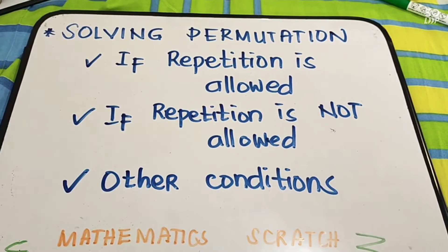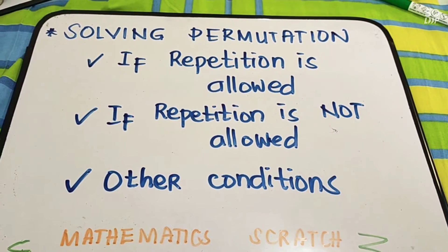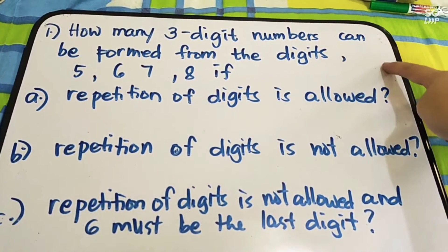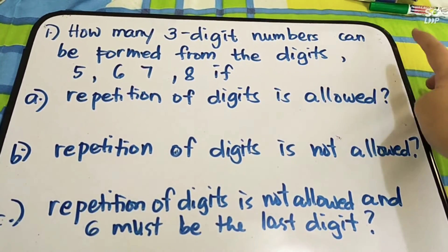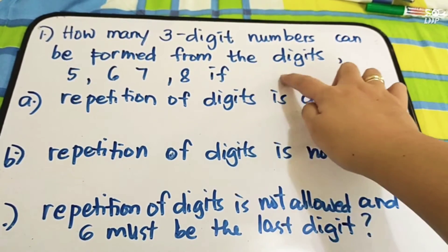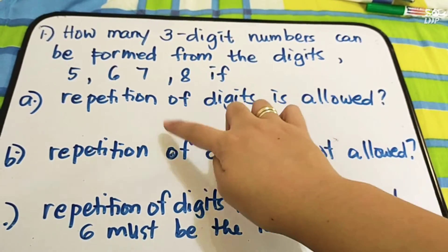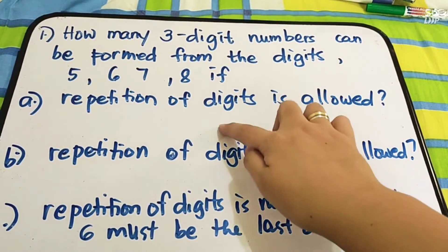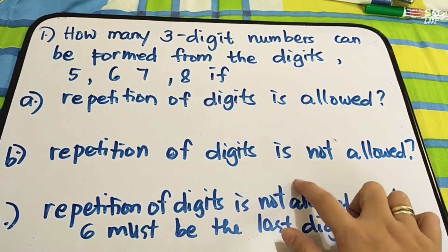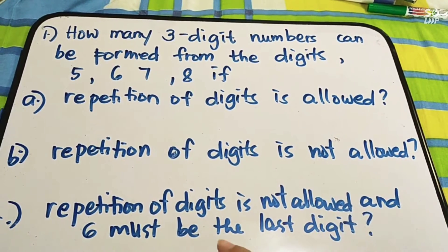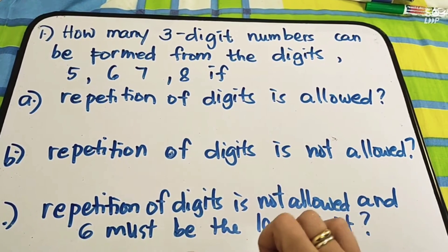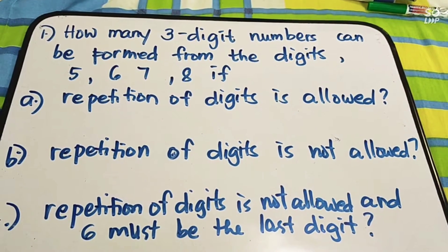Let's start with Example number one: how many three-digit numbers can be formed from the digits five, six, seven, eight? Letter A: repetition of digits is allowed. Letter B: repetition of digits is not allowed. And letter C: repetition of digits is not allowed and six must be the last digit.